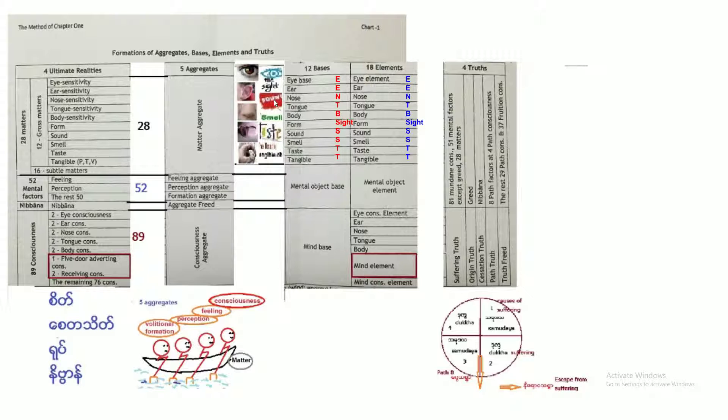Likewise, ear and the sound, there is contact. Hearing consciousness comes. When you hear the good news, that is wholesome hearing consciousness. If you are hearing bad news, somebody gossiping or talking bad things about you, when you hear it, that day you have a bad unwholesome hearing consciousness arises in your mind. Likewise, nose and smell contact, there is nose consciousness. Wholesome and unwholesome. Taste, tongue and the taste, there is taste or tongue consciousness. And then body and tangible contact, there is body consciousnesses. Another one is five-door adverting consciousness and two receiving consciousnesses, and remaining seventy-six consciousnesses.